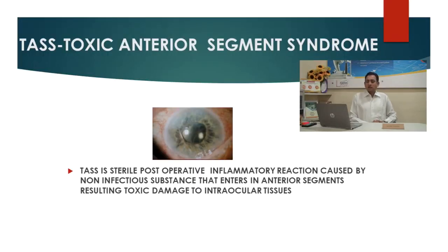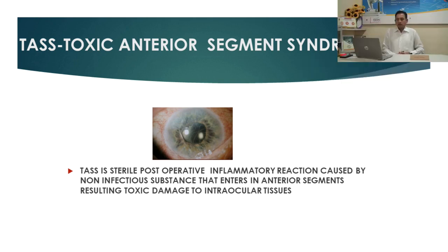So what is TASS? TASS is a sterile postoperative inflammatory reaction caused by a non-infectious substance which enters into the anterior segment during surgery, and it causes toxic damage to intraocular structures. TASS is very difficult to differentiate from infectious endophthalmitis because there will be severe inflammatory reaction with fibrin development and hypopyon in both situations — TASS as well as endophthalmitis.